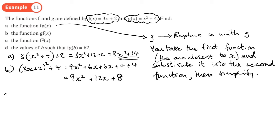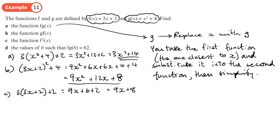For part c, we put f into f twice. So you take f and put f into it: it's 3 times (3x + 2) plus 2, so that becomes 9x + 6 + 2, leaving us with 9x + 8 for that one.